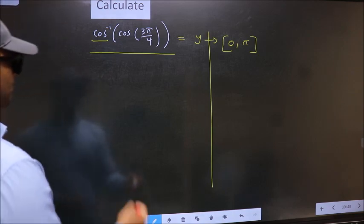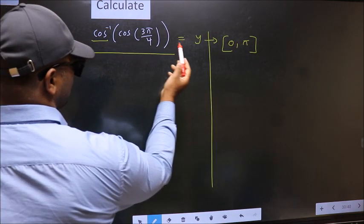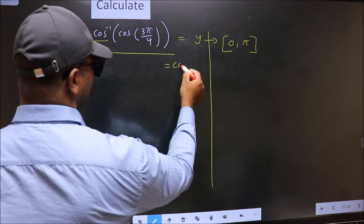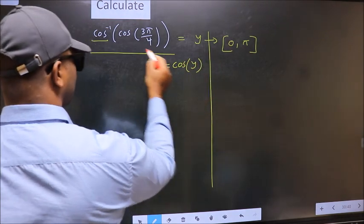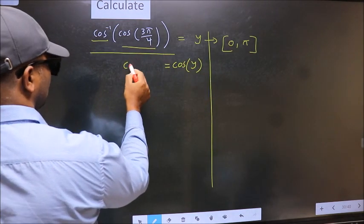Next. Shift cos inverse to the other side. It will become cos y. And this no change.